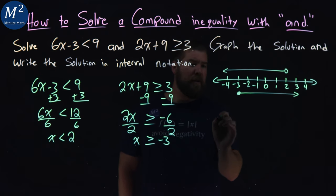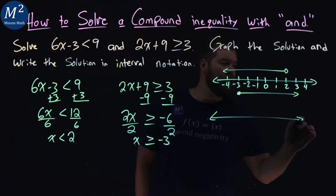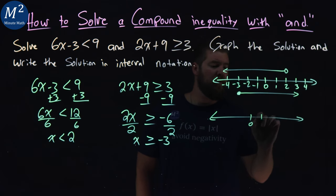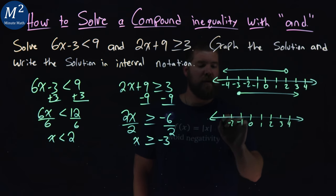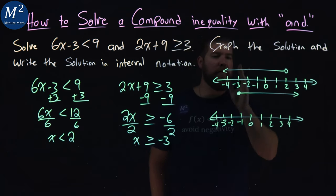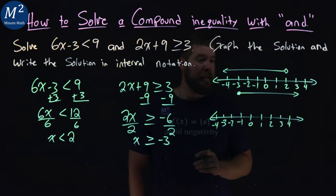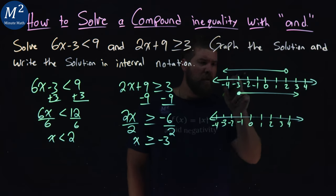So we can write this as one graph. Let's do it here. Let me rewrite my graph: 0, 1, 2, 3, 4, and negative 1, negative 2, negative 3, and negative 4. We want to combine where these two graphs overlap, where they are the same.